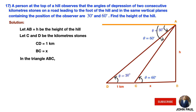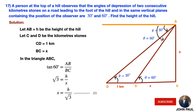In triangle ABC, which is a right angle triangle, tan 60° equals AB by BC. We know that tan 60° is root 3, so root 3 equals H by X. Cross multiplying, X equals H by root 3. Consider this as equation 1.